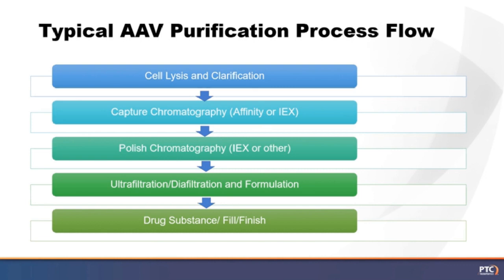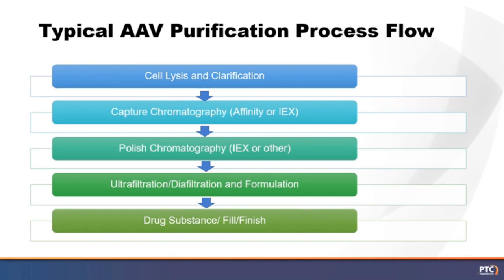After the polishing step, the purified AAV goes through ultrafiltration and diafiltration. In this step, the AAV is concentrated to a certain concentration and diafiltrated into a formulation or pre-formulation buffer, followed by fill and finish to become the drug product. The goal of the process development team is to produce a robust and scalable purification process to produce AAV in pure and effective form, examining many different process parameters to ensure we meet specifications for critical quality attributes.